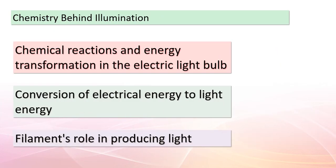It's time to unveil the chemistry behind the brilliance of the electric light bulb. Every time you flip that switch, an intricate series of events takes place: electric current flows through the filament — usually made of tungsten — and as the current passes through, it meets resistance, generating heat. This heat causes the filament to glow brightly, emitting light. Electrical energy is transformed into light energy through this process. However, not all electrical energy gets converted into light — some is lost as heat. This is why we're constantly working to improve the efficiency of lighting technology, making it more energy-efficient and environmentally friendly.